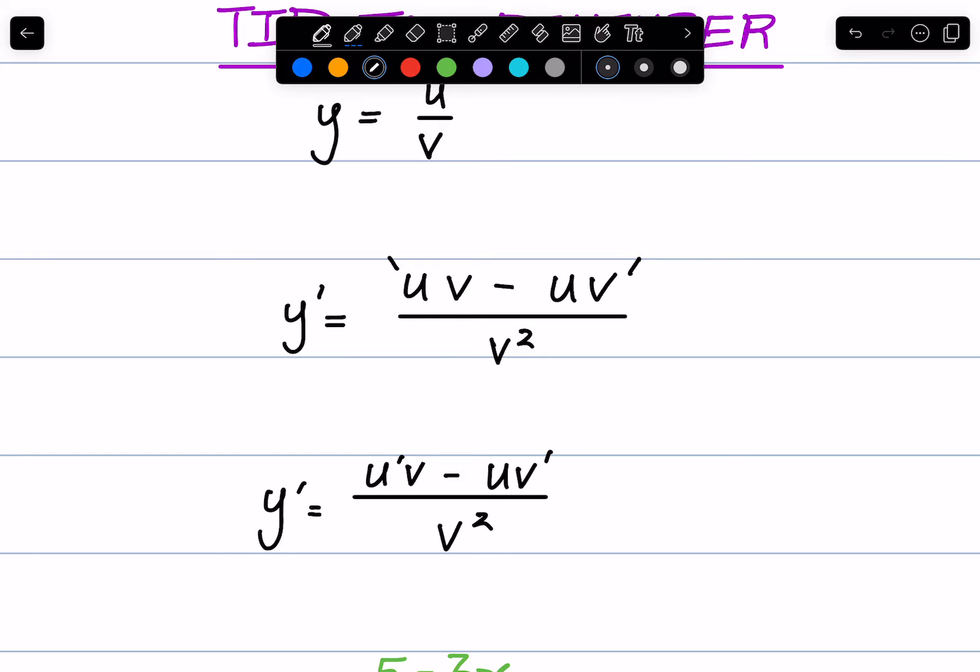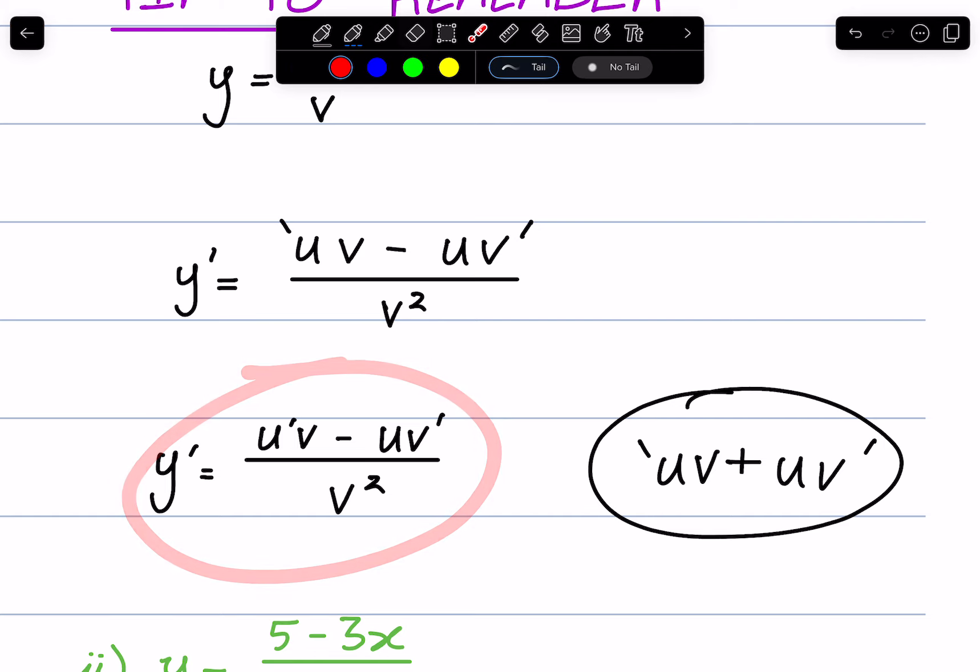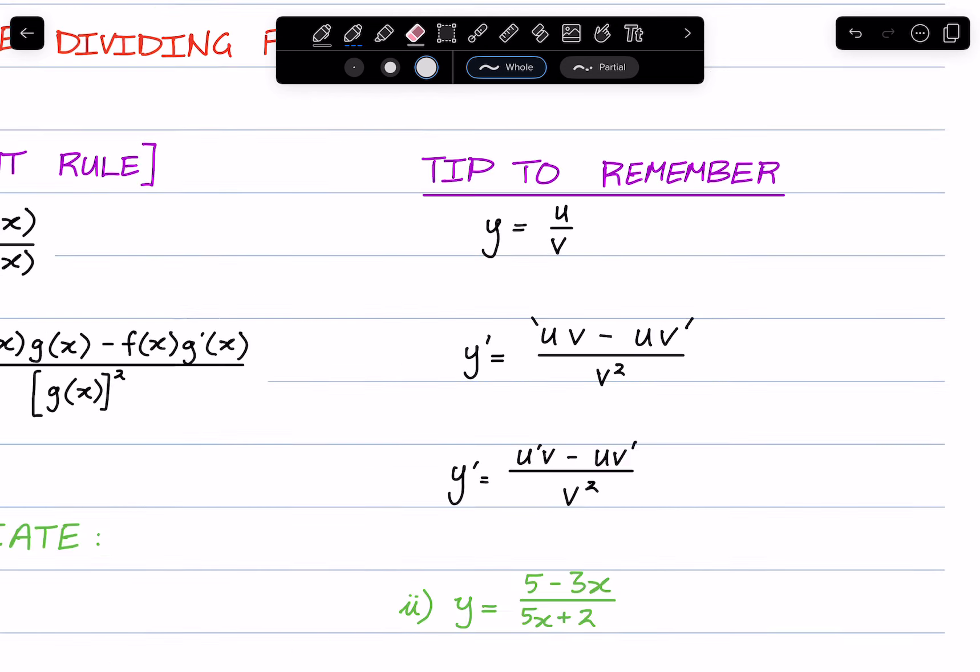So notice how with the product rule it's still u v u v with bunny ears, but with the product rule it's plus, whereas this is the quotient rule.